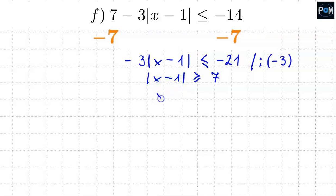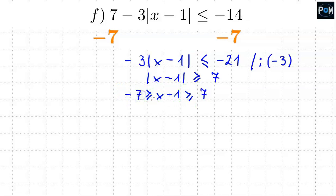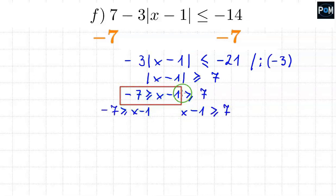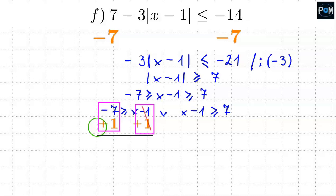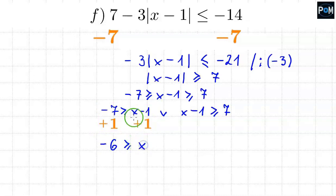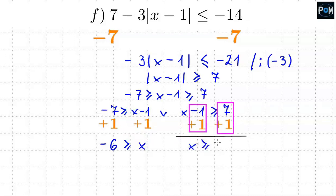Now we have a typical absolute value inequality. We rewrite it without the absolute value sign, adding the inequality sign on the other side with negative 7. This splits into two inequalities. Since the sign is 'greater than or equal to,' we use 'or.' Adding 1 to both sides of each inequality: negative 7 plus 1 equals negative 6, so minus 6 is greater than or equal to x from the first. From the second, x is greater than or equal to 8.